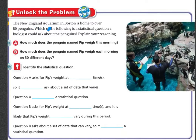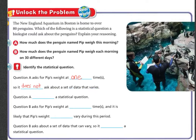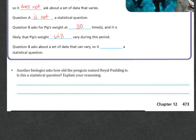Let's unlock the problem. The New England Aquarium in Boston is home to over 80 penguins. Which of the following is a statistical question a biologist could ask about the penguins? Question A says, 'How much does the penguin named Pip weigh this morning?' Question B says, 'How much did the penguin named Pip weigh each morning on 30 different days?' Question A asks for Pip's weight at one time, so it does not ask about a set of data that varies — Question A is not a statistical question. Question B asks for Pip's weight at 30 times, and it is likely that Pip's weight will vary during this time, so it is a statistical question.